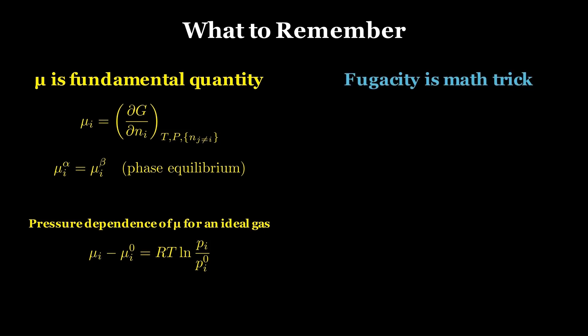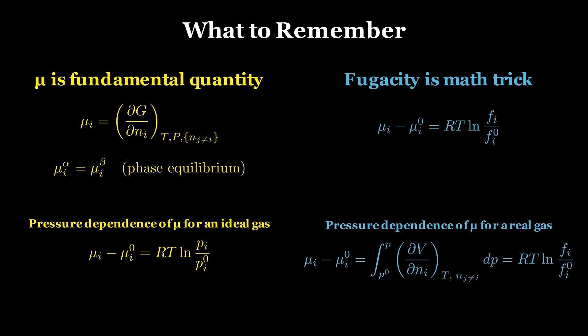To preserve this form for real gases, we introduce fugacity, a mathematical construction. Fugacity replaces pressure in the logarithmic expression, allowing us to carry over the ideal gas algebra even when the gas is non-ideal. For real gases, μ involves an integral over the molar volume with respect to pressure. Fugacity just equates that integral to the logarithmic expression derived for ideal gases. So the non-ideality of real gases hasn't vanished but hidden in f versus P relationship.